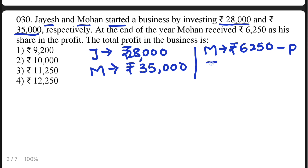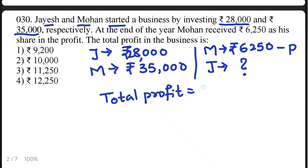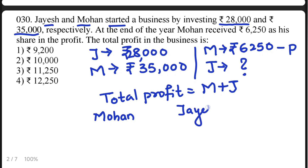We don't know Jayesh's profit directly — they are asking total profit, which includes both Mohan's share and Jayesh's share. To find it, first we need to find Jayesh's share. Mohan invested 35,000 rupees and Jayesh invested 28,000 rupees.